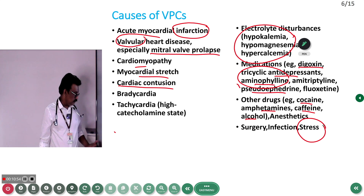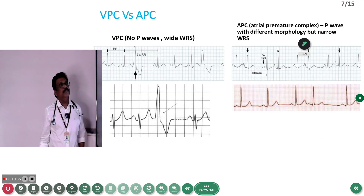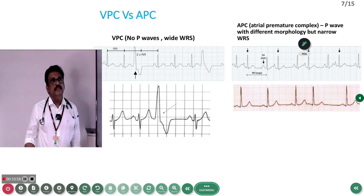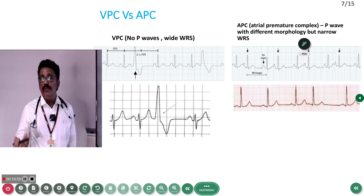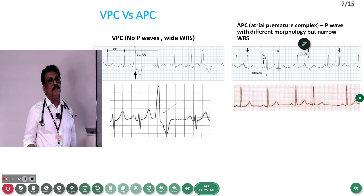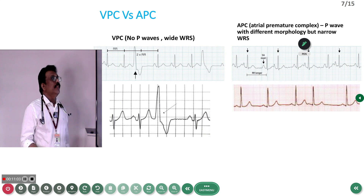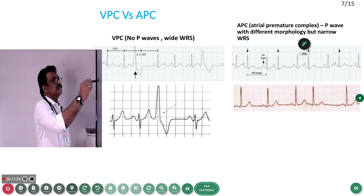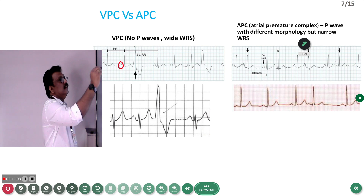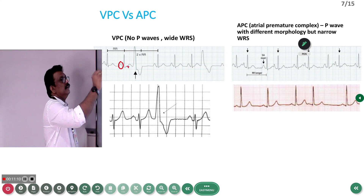Cocaine and amphetamine are recreational drugs that can also produce various types of ectopics. Another important cause in the ICU is stress — many patients after trauma, surgery, or infections can have stress-induced cardiac problems and ectopics.